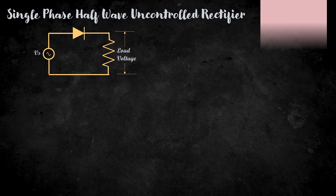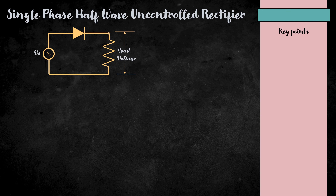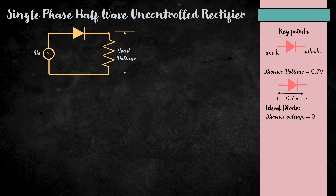Now, let's see how the single phase half wave uncontrolled rectifier works. First, let's see a few key points about the diode. The diode has two terminals: anode and cathode. The barrier voltage of a diode is 0.7 volt. That means the diode allows the current to flow through it only if the supply voltage is greater than 0.7 volt. For an ideal diode, the barrier voltage is considered to be zero. Therefore, it is considered to allow the current to flow through it if the input voltage is greater than 0 volt. To make the analysis easy, we are considering the diode in the rectifier as an ideal diode.